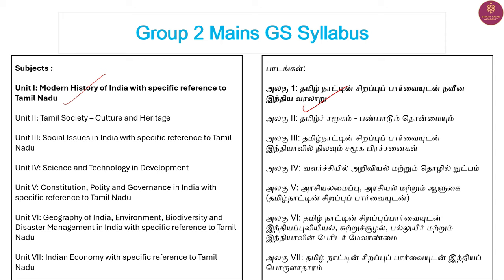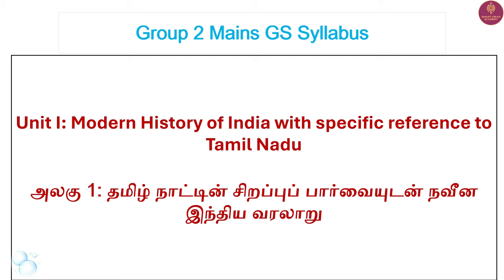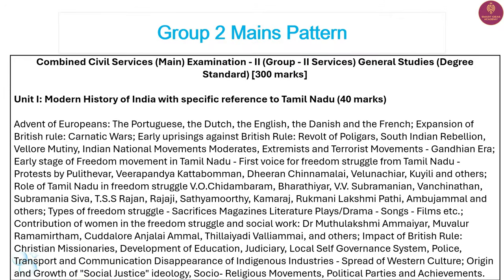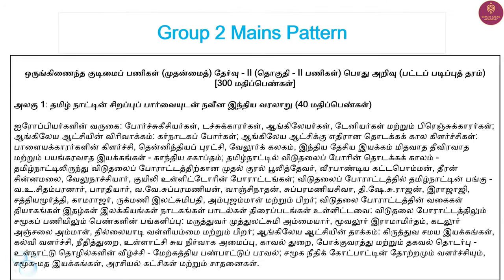If you look at the same syllabus, this is the same syllabus. The next video will return to study the school books. Here is the syllabus: Modern History of India with a specific reference to Tamil Nadu. Please check the description below. You can see 40 marks in the main section, so there is a slightly different syllabus.